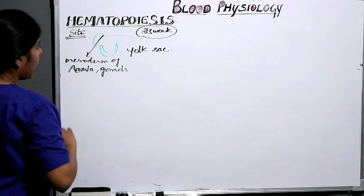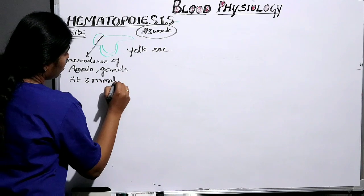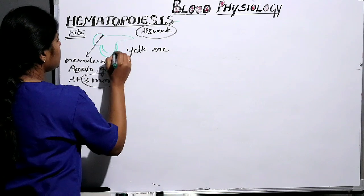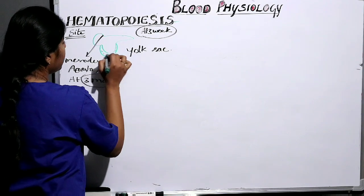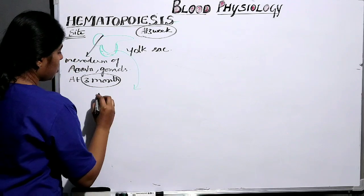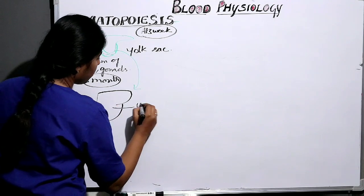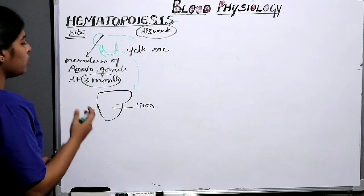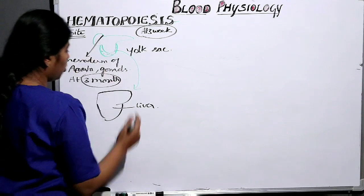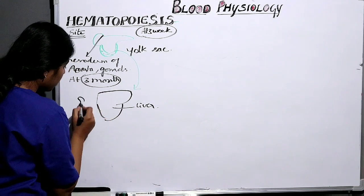Then at the third month of the embryo, the uncommitted committed pluripotent stem cells start migrating to the liver. So at the end of the third month, the liver acts as the major site of hematopoiesis. In the third month, some hematopoiesis also occurs in the spleen.